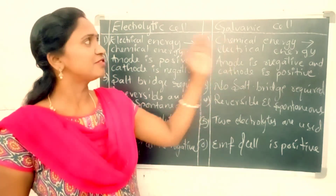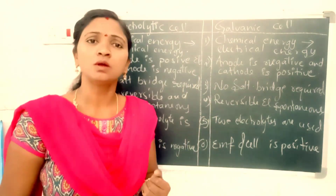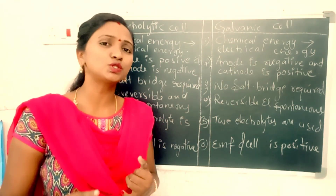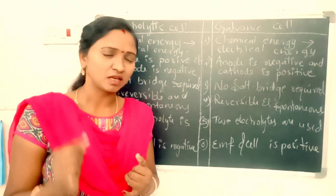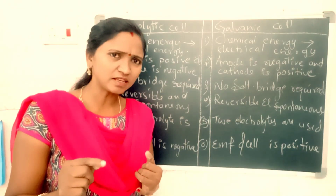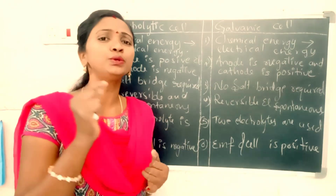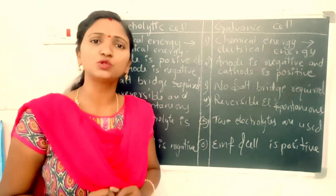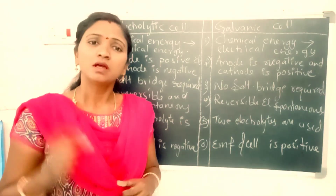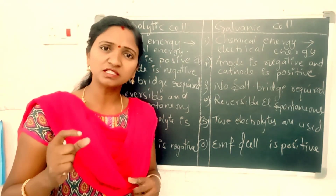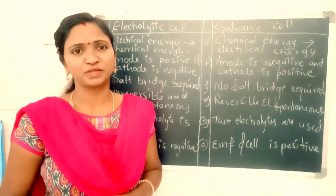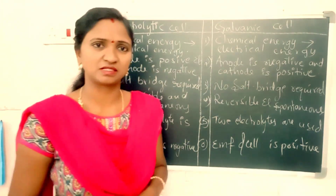So, the first difference: electrolytic cell is used to convert electrical energy into chemical energy, whereas galvanic cell is used to convert chemical energy into electrical energy.